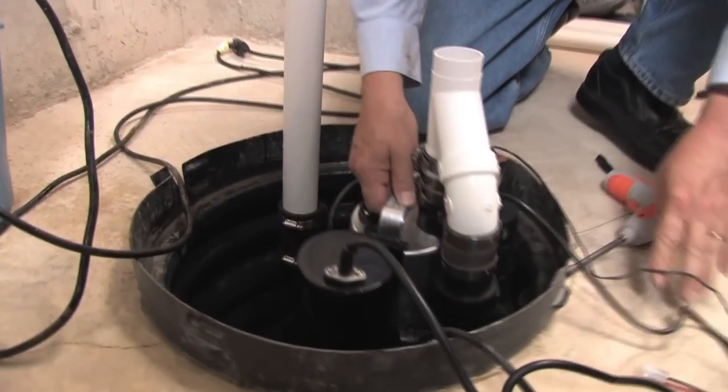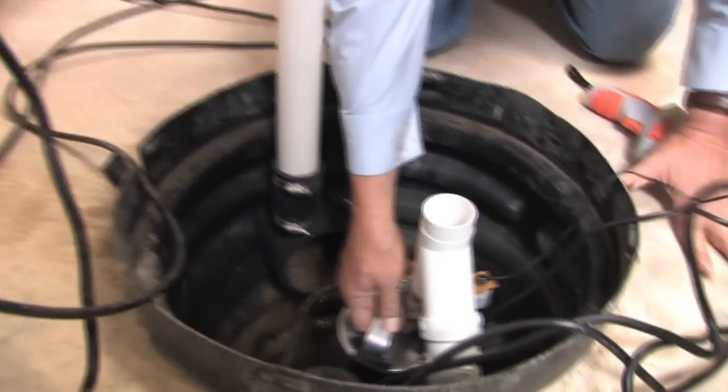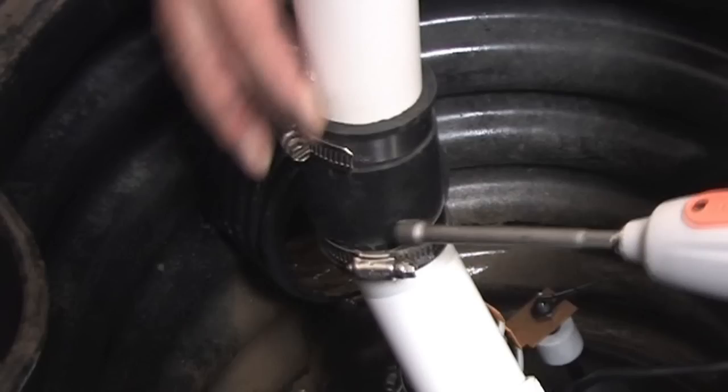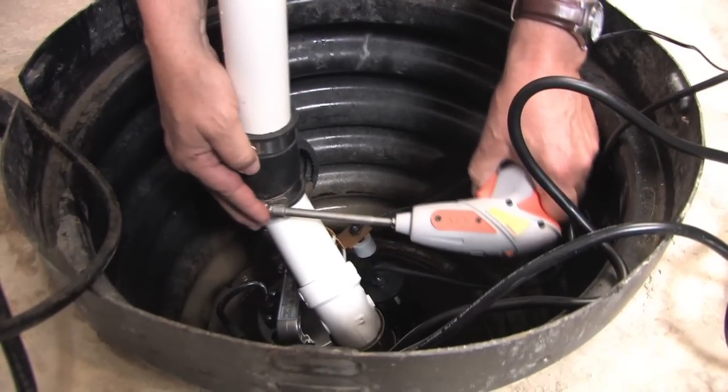Lift the combination system by the handle on the primary pump and lower it into the sump pit. Connect the discharge pipe to the union and tighten the hose clamp.